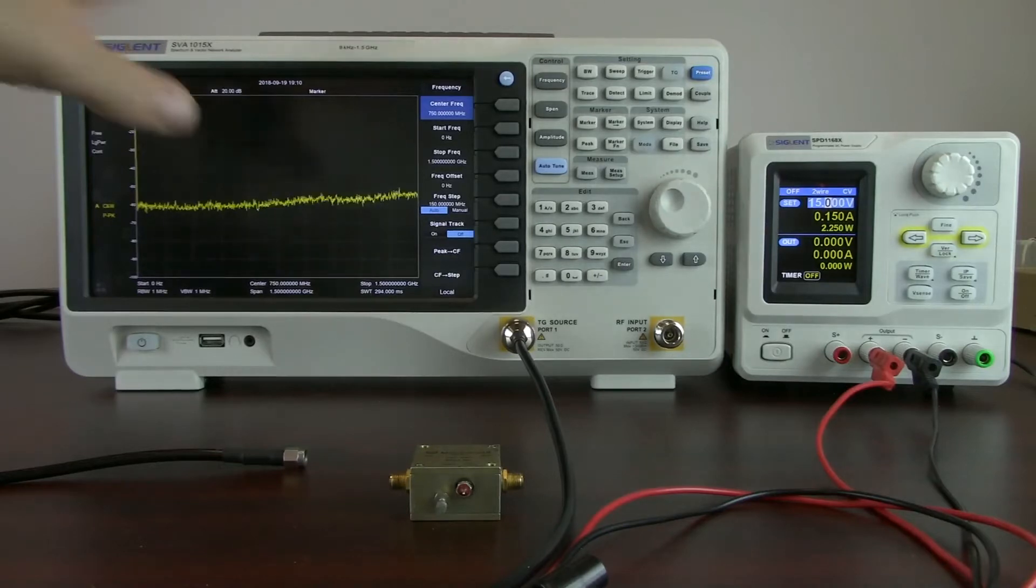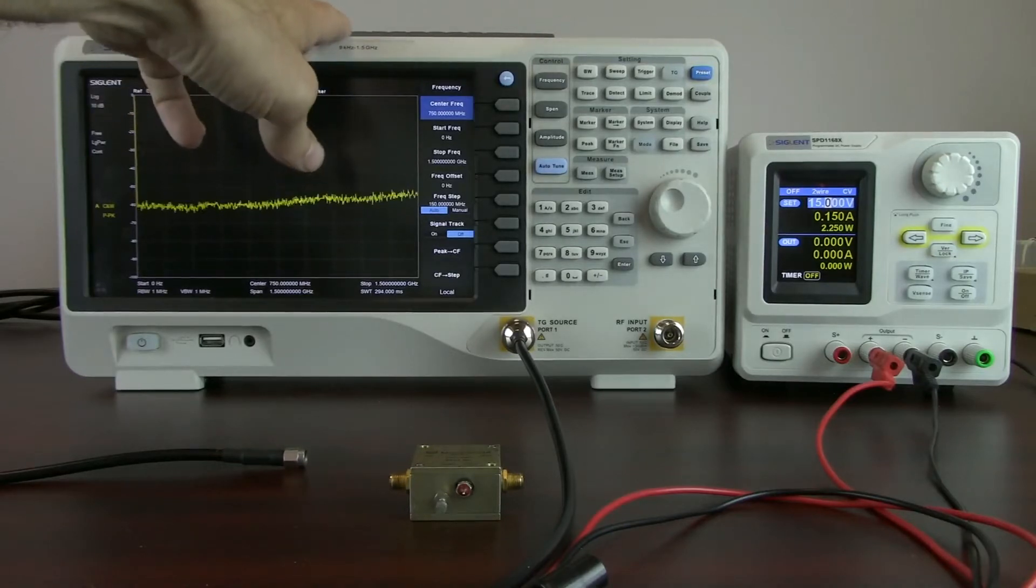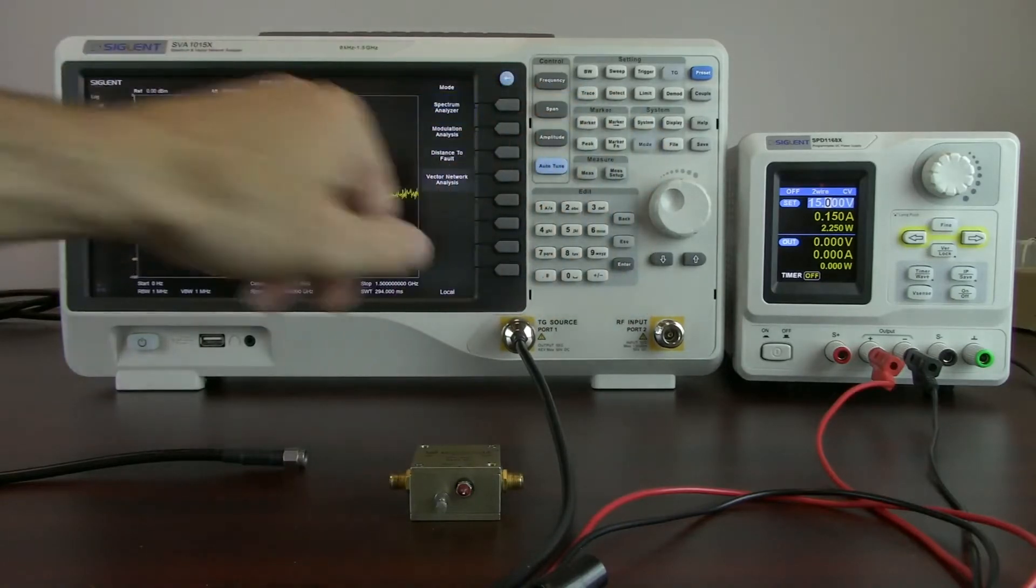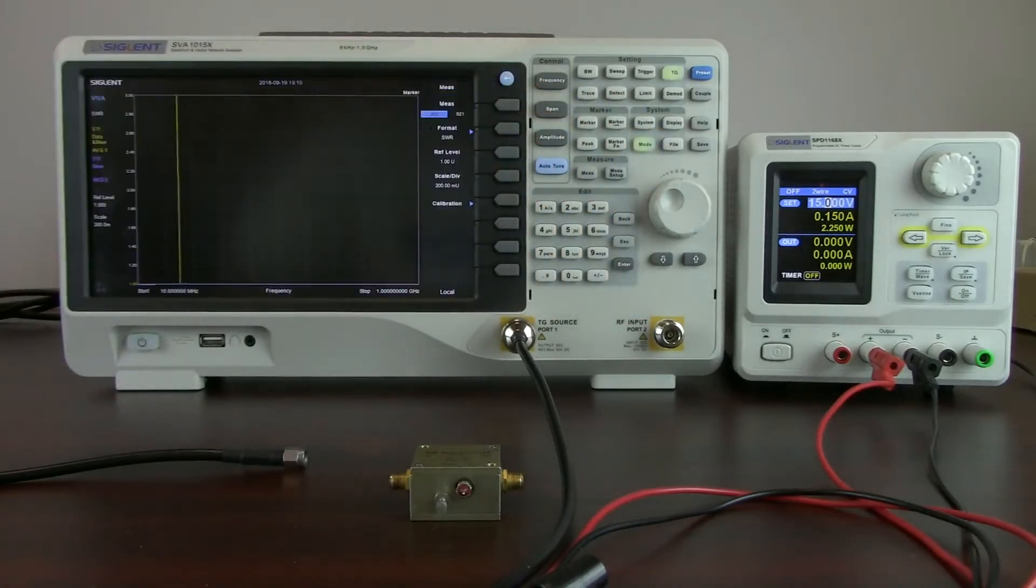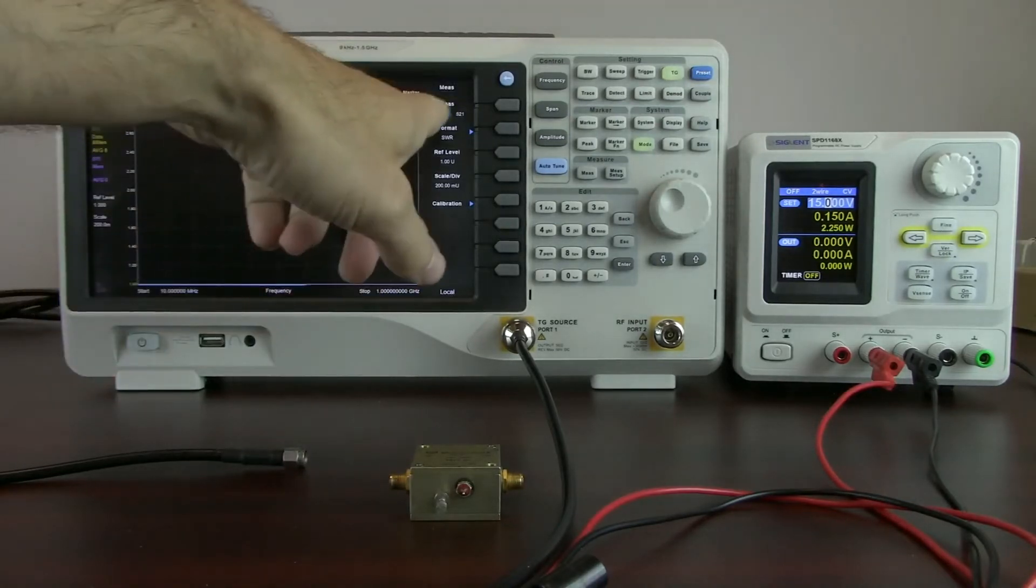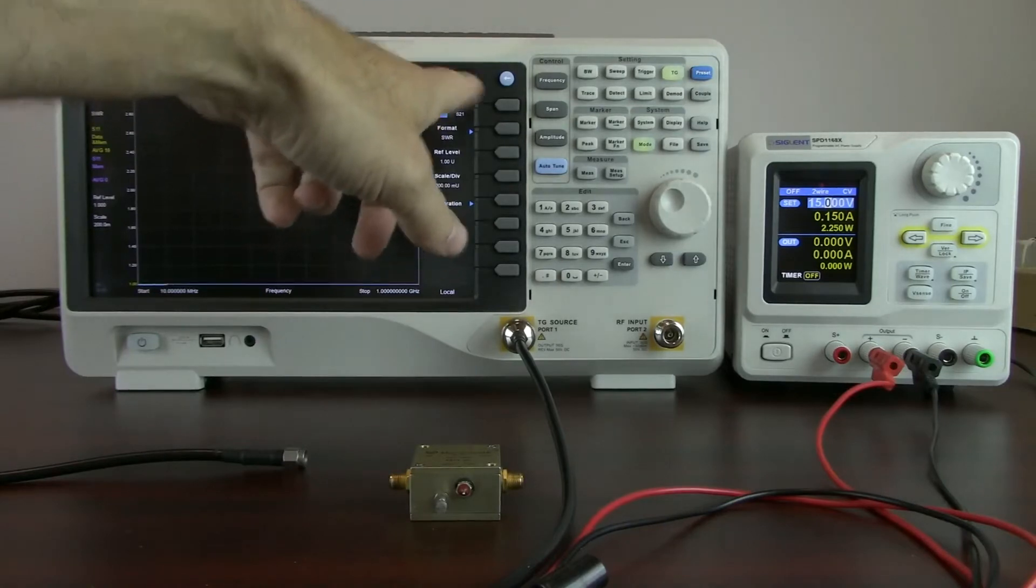So, the first thing we're going to do is configure the SVA for VNA. We're just going to press the mode button and hit Vector Network Analysis. That's going to put the instrument into VNA mode or Vector Network Analyzer mode. And now we've got the ability to select S11 or S21.